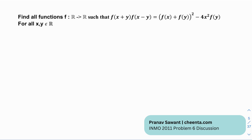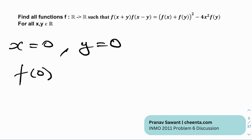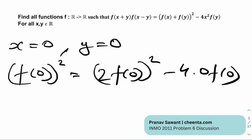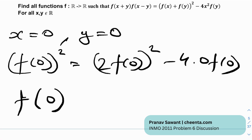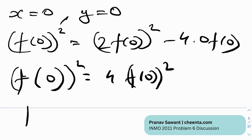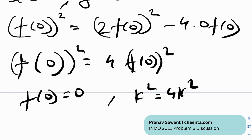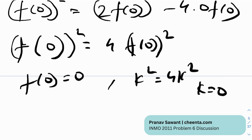If we put x = 0 and y = 0, the left-hand side gives f(0)². On the right-hand side we get 2·f(0)² − 4·0·f(0), which is just 0. So we get f(0)² = 4·f(0)², which is of the form k² = 4k². The only solution is k = 0, so f(0) = 0, which is quite trivial.